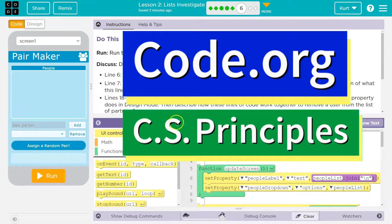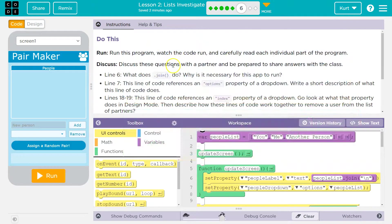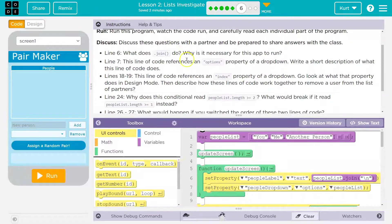This is code.org. Let's see what we're doing. Run this program. Watch the code run and carefully read each individual part. Discuss these questions with your partner and be prepared to share your answers. What does join do? Why is it necessary in this app?